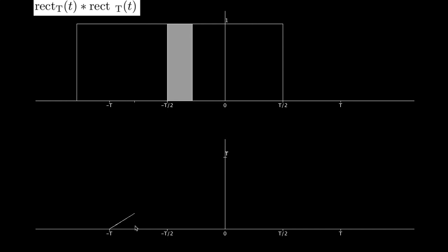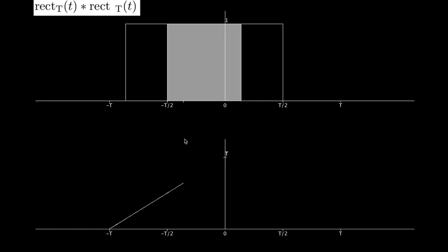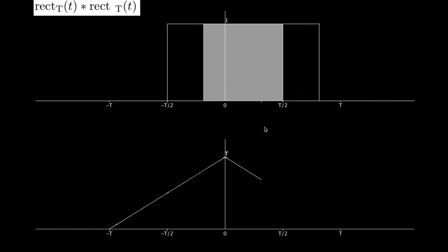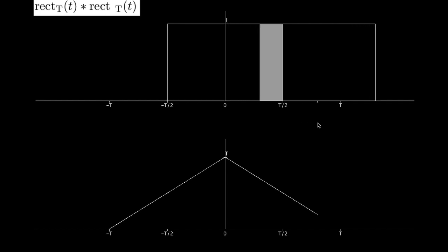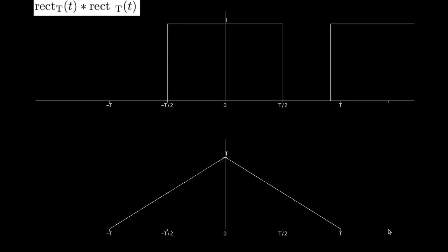As I'm sliding it more to the right, the area is increasing. Right here, half the overlap equals half the width of the rectangle, so the area is t/2. As I slide it more to the right and arrive at 0, we've got the maximum overlap, corresponding to an area of t. As I slide further right the area is decreasing, becoming t/2 again, then 0 when they stop overlapping, and moving further right the overlap remains 0.